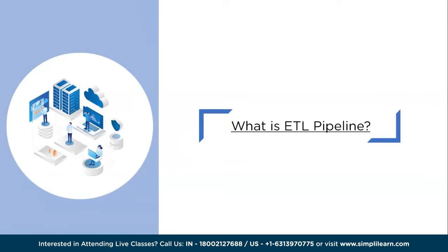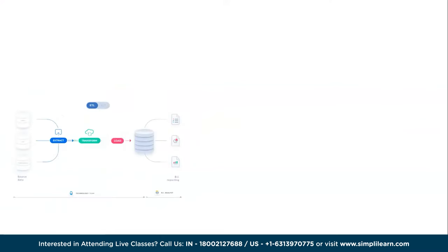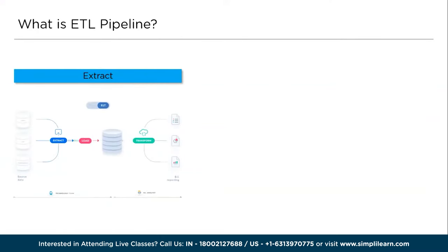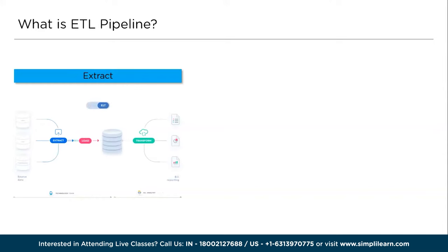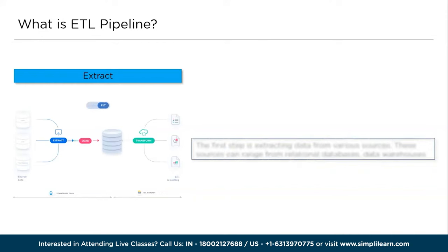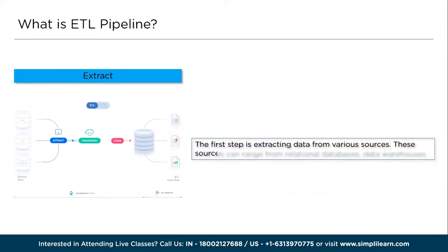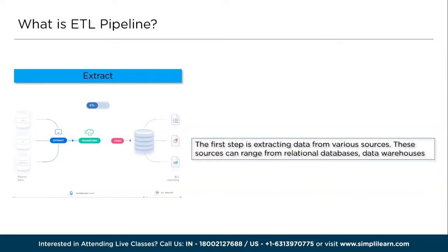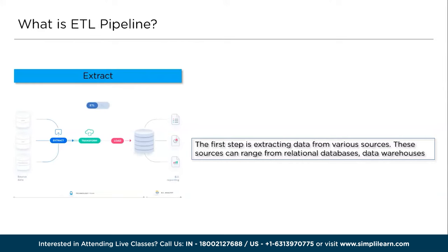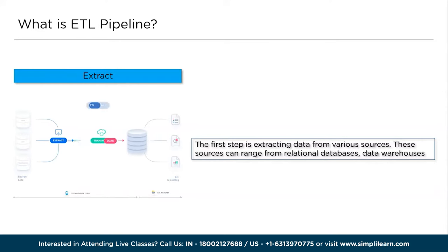ETL stands for Extract, Transform, and Load, representing three core steps in the data integration and transformation process. The first step is extraction: retrieving data from various sources such as relational databases, data warehouses, APIs, or streaming platforms. The goal is to gather raw data into a centralized location for further processing. Tools like Apache Kafka, Apache NiFi, or custom scripts can be used to perform extraction efficiently.